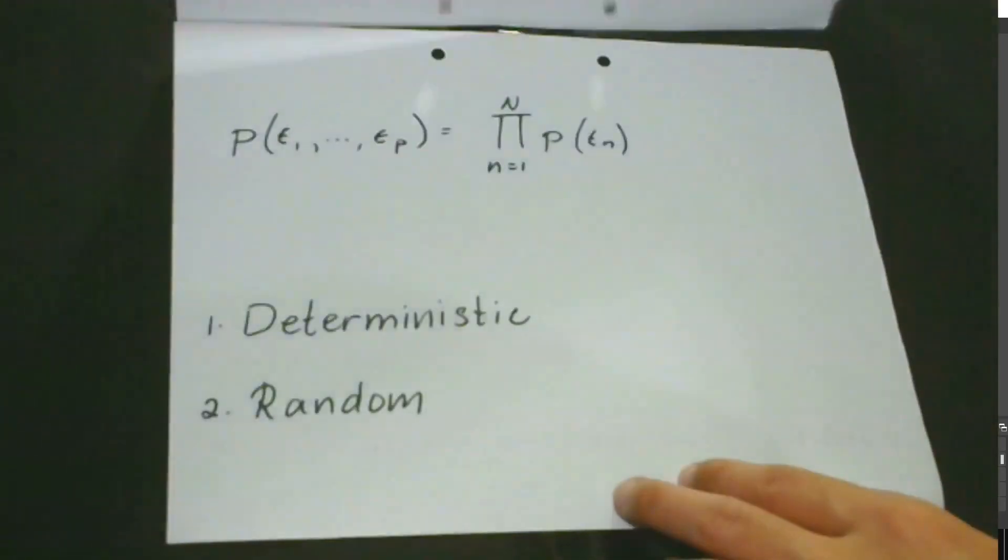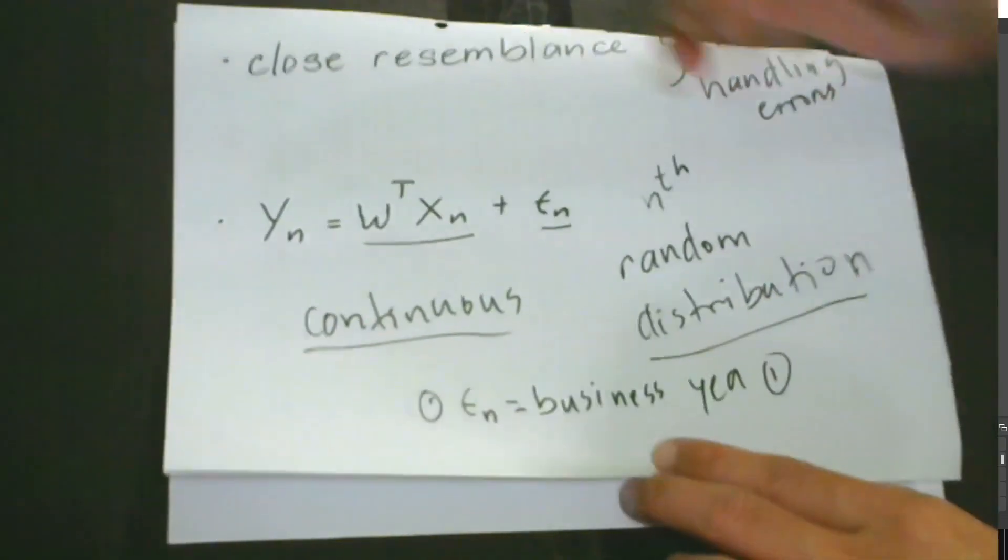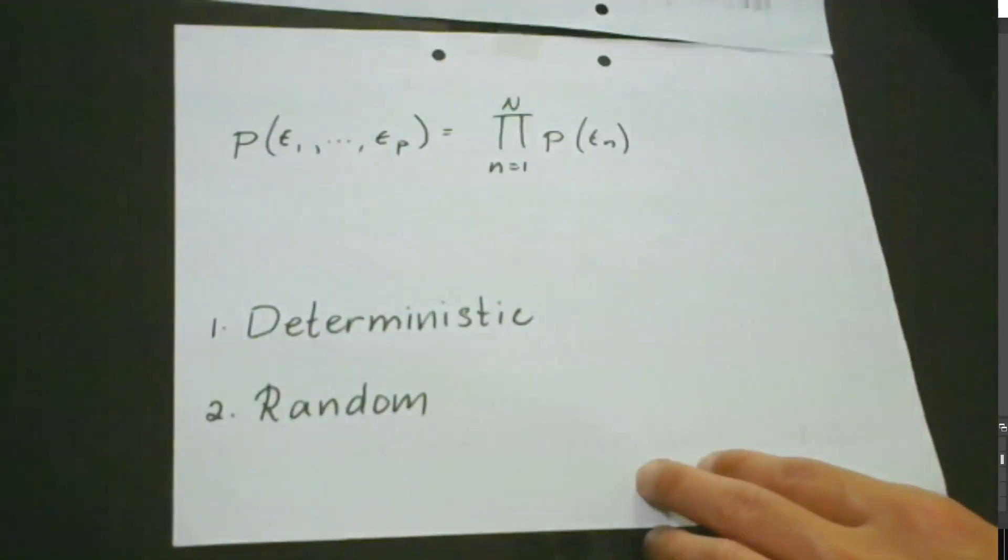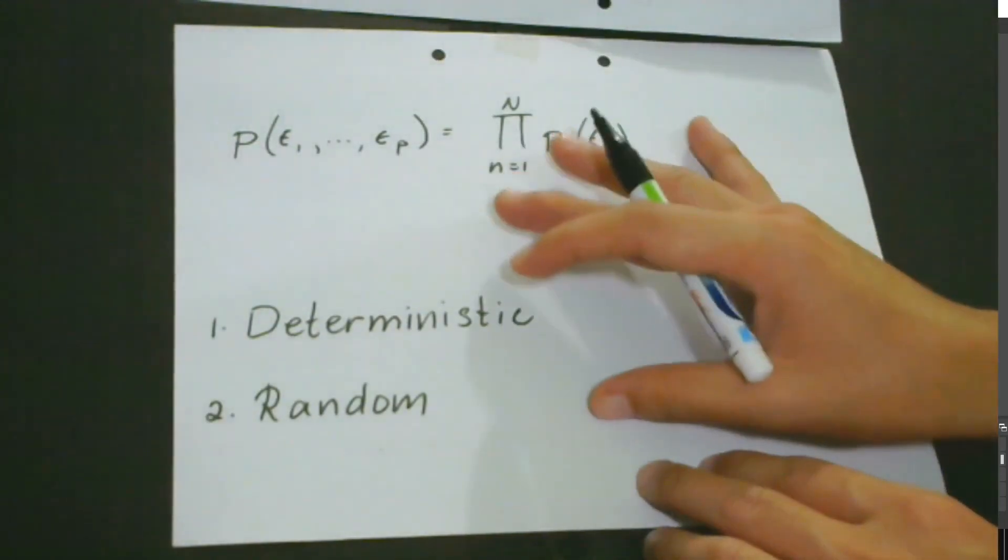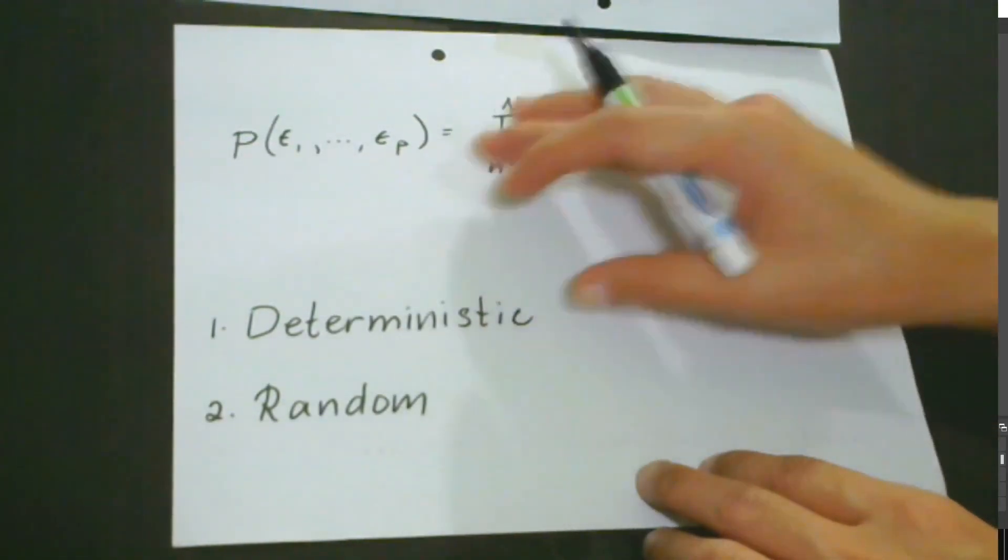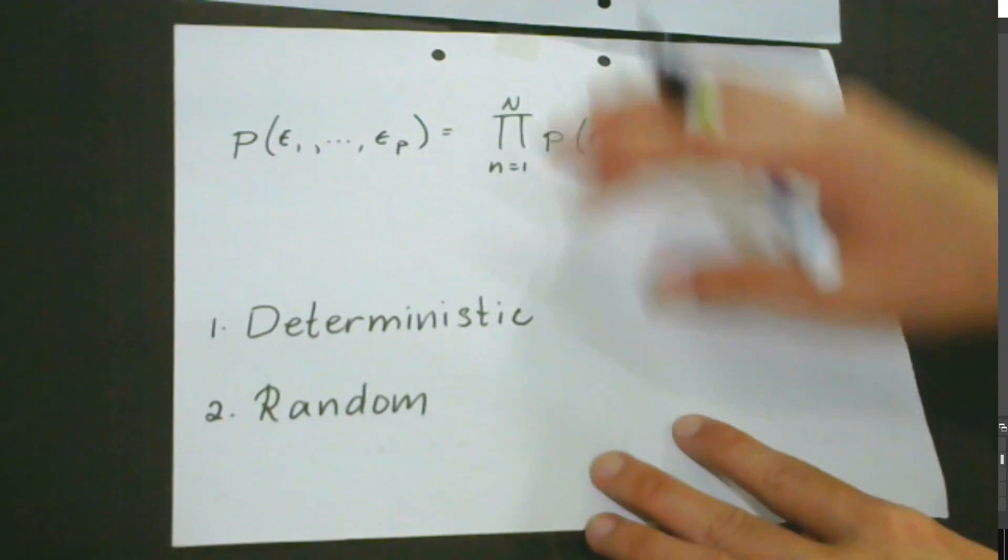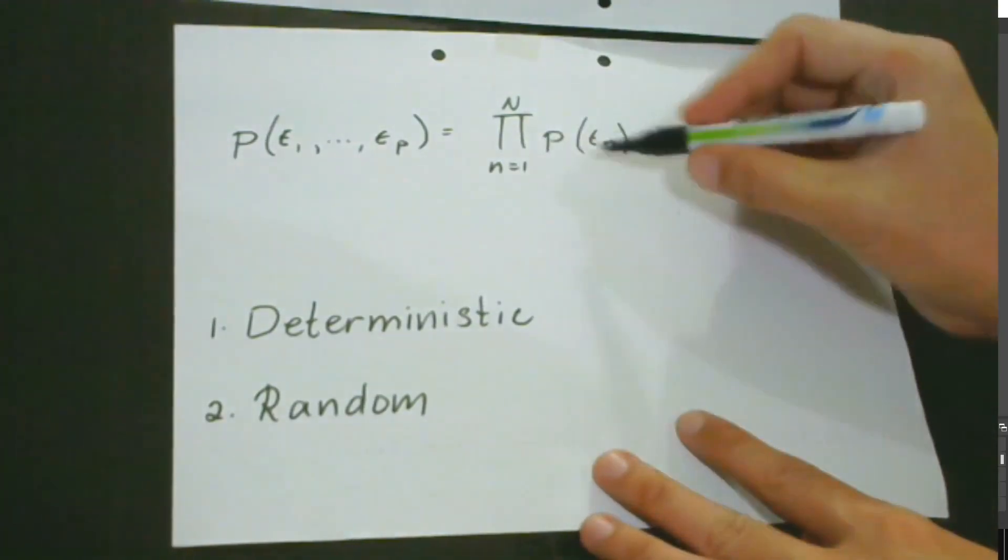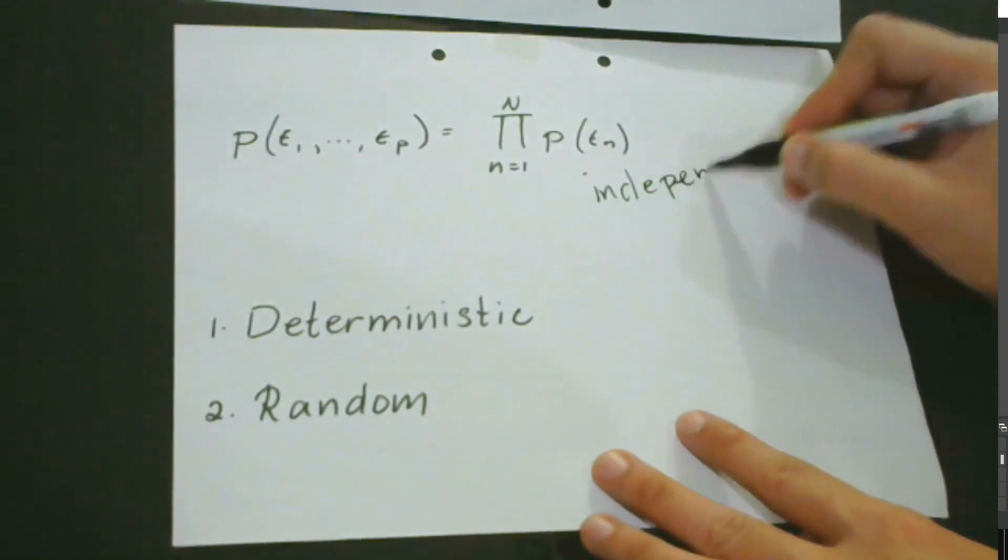That's why we call it continuous. And because of this kind of situation, we could say that our random variable is independent.